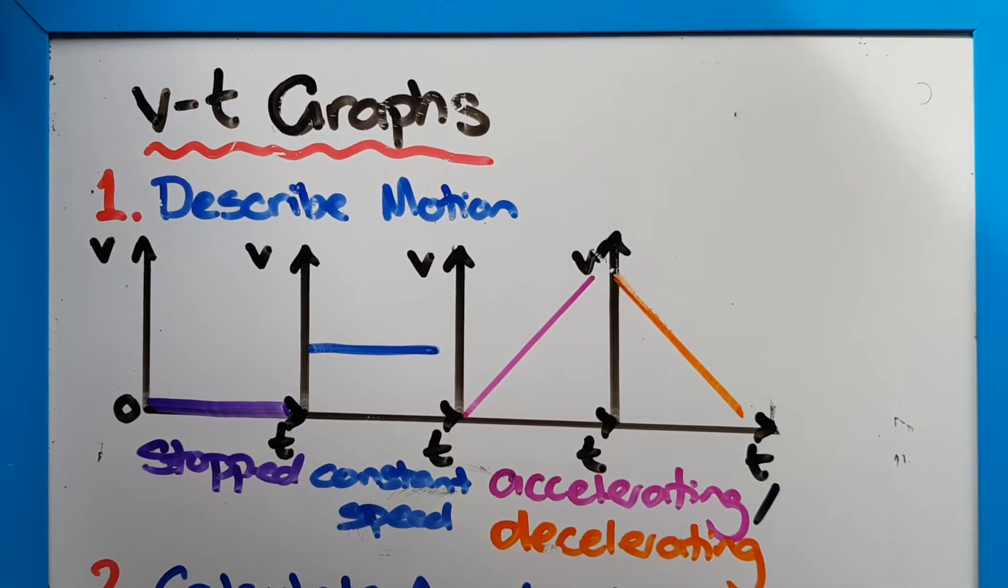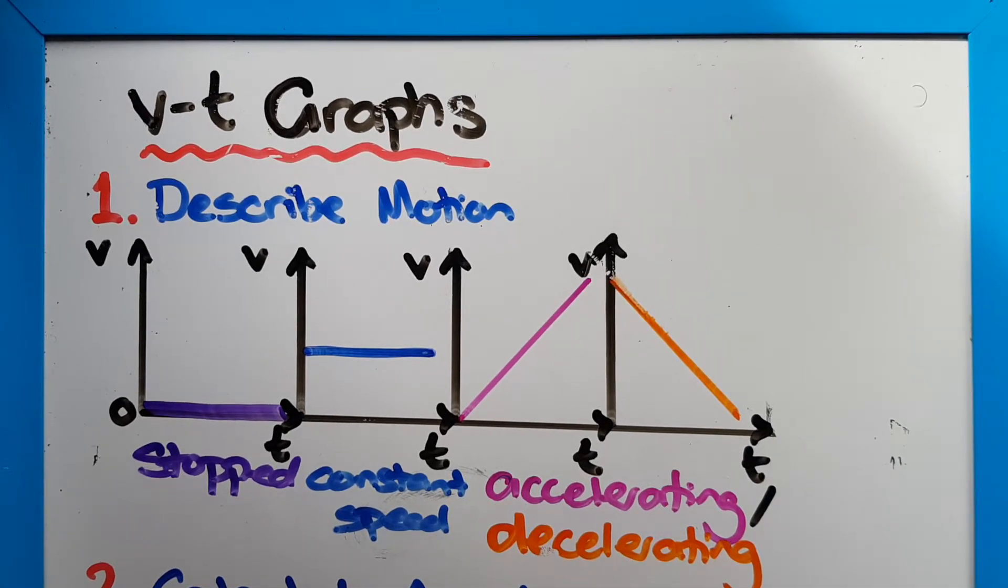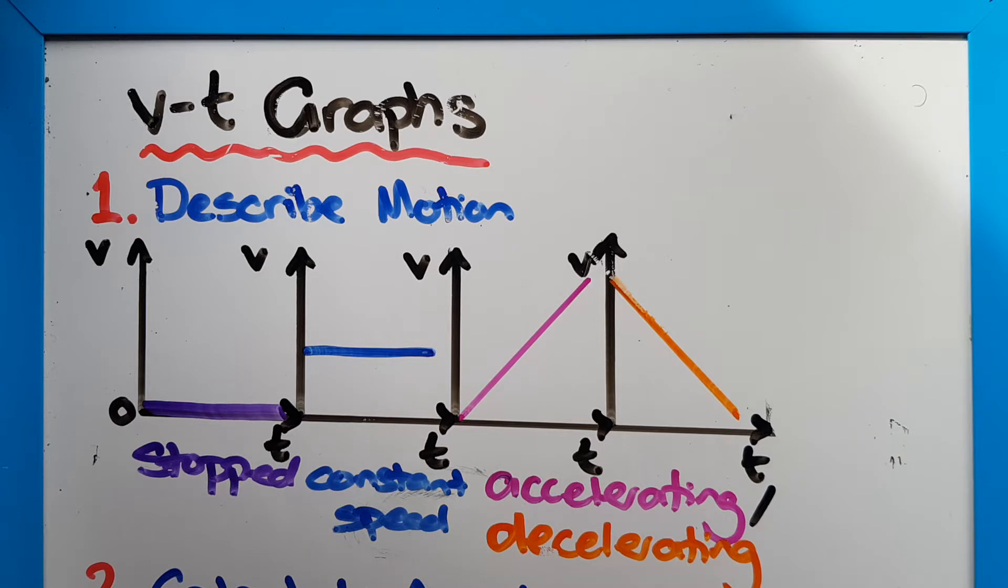In this video we're going to look at how we use a v-t or speed-time graph to describe motion, but also to calculate what's going on with an object's motion. So the first thing is that we need to be able to describe the motion based on our speed-time graph.